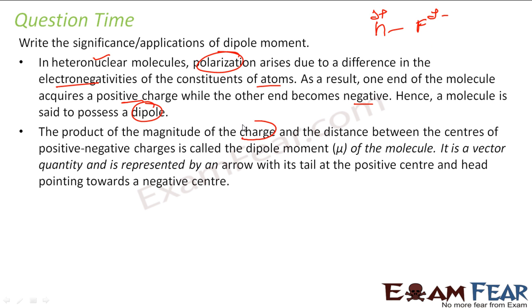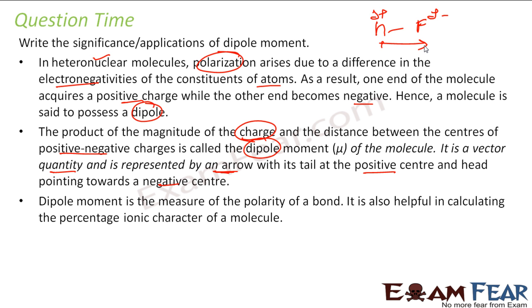And the product of magnitude of this charge and the distance between the center of positive negative charge is called dipole moment of the molecule. It is a vector quantity represented by arrow with a tail pointing to positive and the head pointing towards negative. Example in this case, I will have something like this. This will be my tail, this will be my head towards the other. And this is generally the measure of polarity of bond. It is helpful in calculating the percentage of ionic character in a covalent bond or in a molecule. It is generally helpful in finding the ionic character in a molecule.